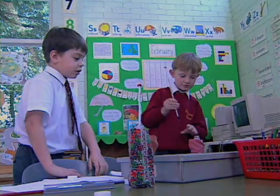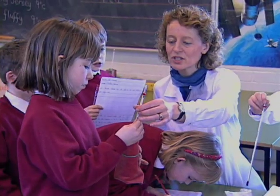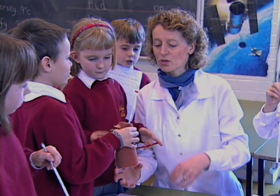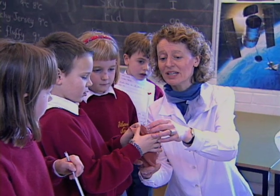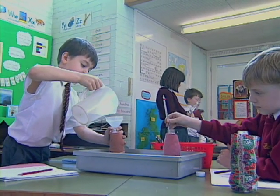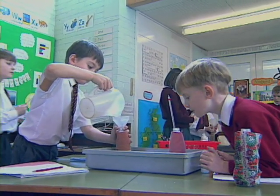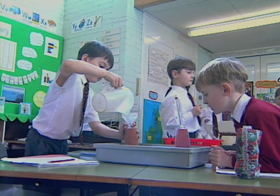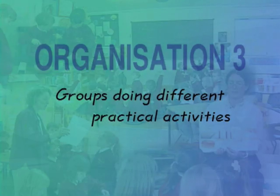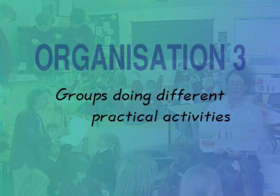Make sure all the children are working at an appropriate level. Walk round the class helping, questioning and promoting new ideas. But what if there isn't enough equipment for everyone to do the same task together, or you want the class to investigate a number of different aspects between them? One alternative approach is for small groups to do different activities and then to share their knowledge at the end.